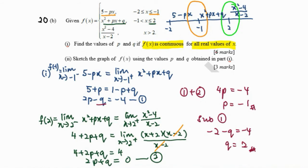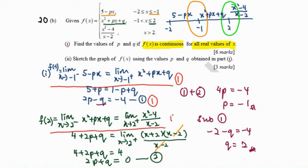To score all six marks, the concept must be correct: the limit as x approaches negative 1 from the left-hand side must equal the limit from the right-hand side, giving the first equation. Similarly for the point x equals 2, giving the second equation. Finally, solving gives p equals negative 1 and q equals 2.